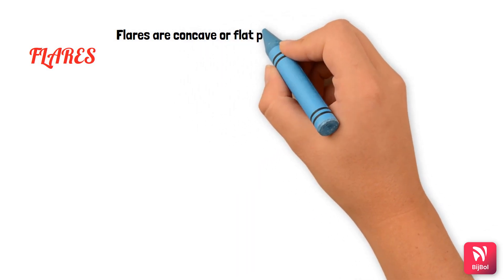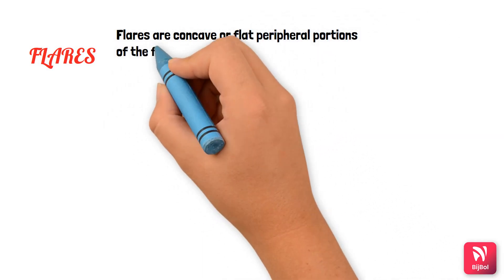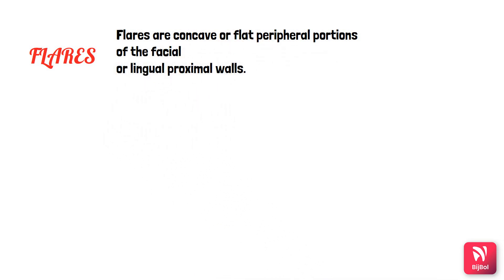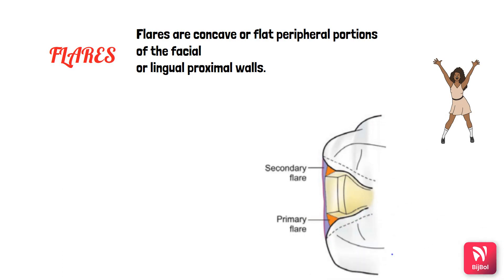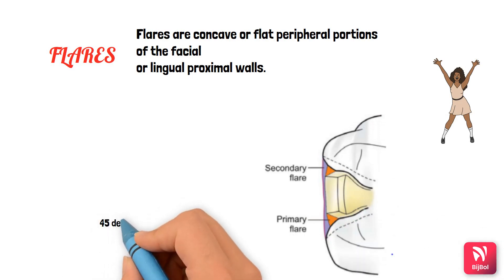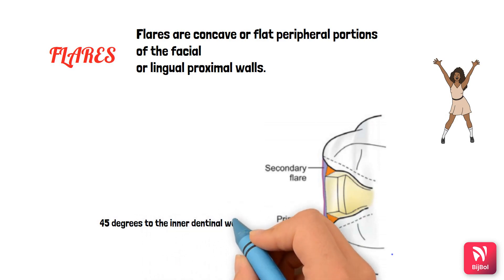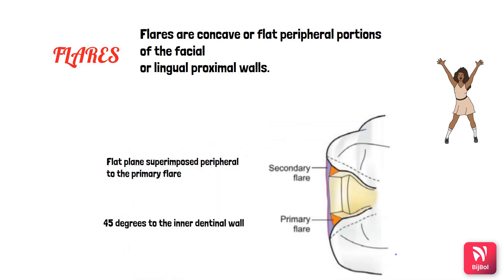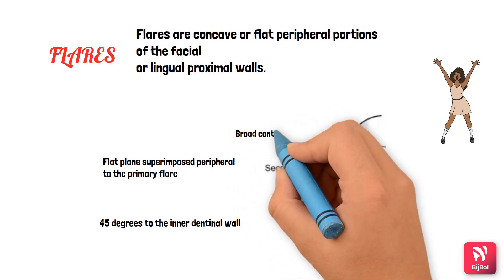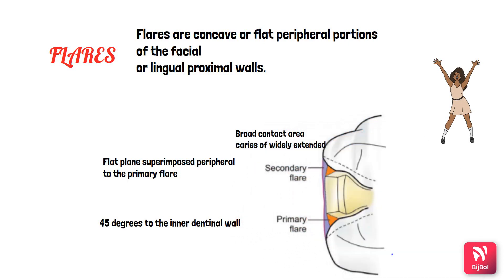Flares are the flat or concave peripheral portions of the facial or lingual proximal walls, usually placed on the facial and lingual proximal margins of the cavity preparation. They are of two types: primary flare and secondary flare. The primary flare is like a long bevel where the external enamel wall of the proximal portion is at 45 degrees to the inner dentinal wall. The secondary flare is a flat, plain surface superimposed peripheral to the primary flare, usually prepared on the enamel, with different angulations indicated in cases of broad contact areas or widely extended caries.